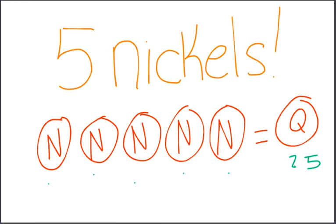Five nickels — five, ten, fifteen, twenty, twenty-five — equals twenty-five cents. And we can trade that for one quarter, which is also worth twenty-five cents.